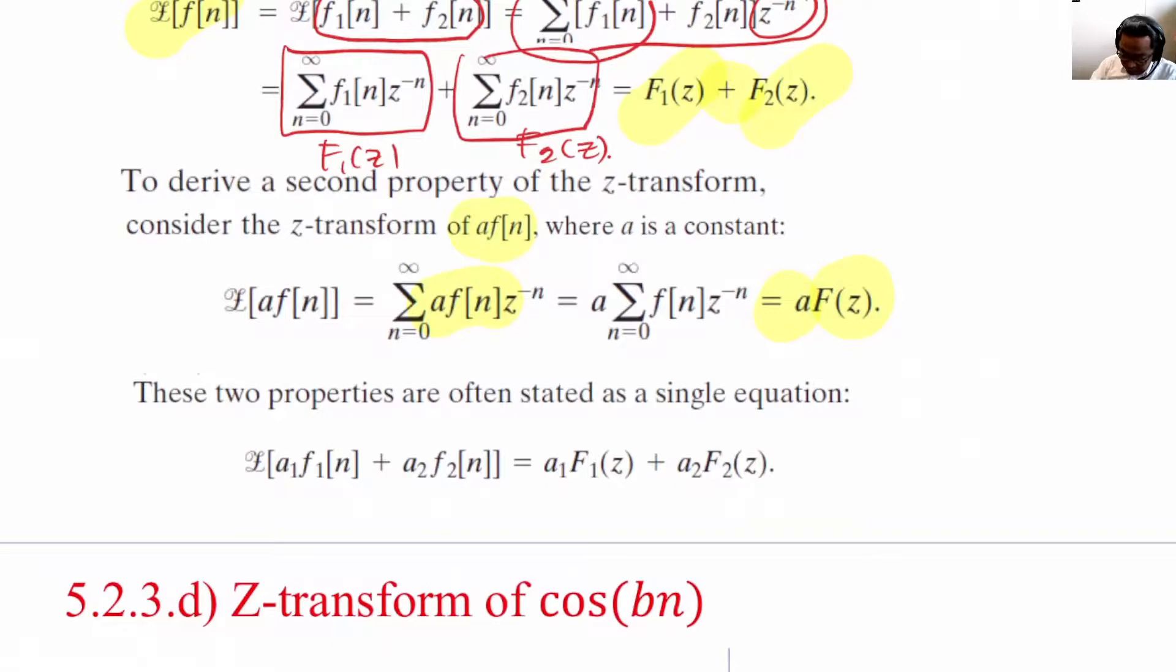To derive the second property, again, we begin with A multiplied by Fn. We put in A Fn into the Z-transform, and we realize that, again, we can pull out the A. When we pull out the A, we recognize this simply as A times F of Z. Therefore, these two properties are met.